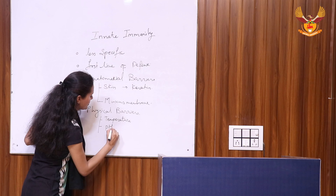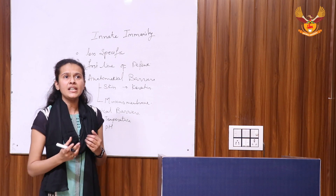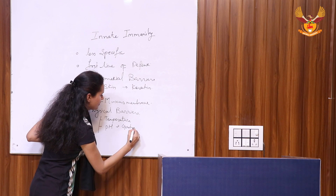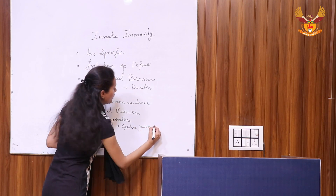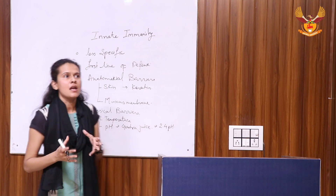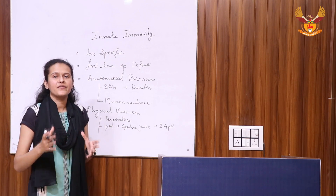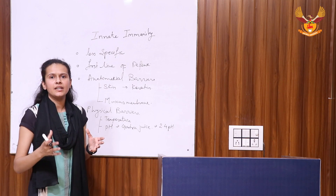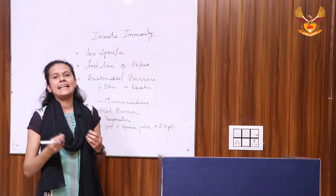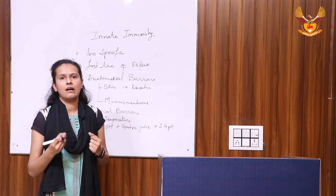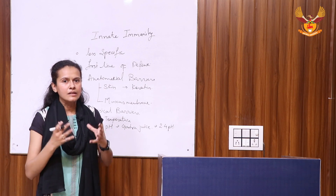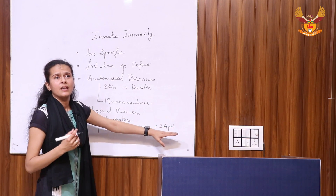Another physical barrier is pH — the pH of our skin as well as our stomach. The pH of the stomach, due to gastric juice, is almost around 2.4. This highly acidic condition is unfavorable for the growth of any type of pathogen, whether it is bacteria, fungi, or parasites. While we eat unhealthy foods, they may contain microorganisms, but when they reach the gut area, due to this pH, they are usually destroyed.